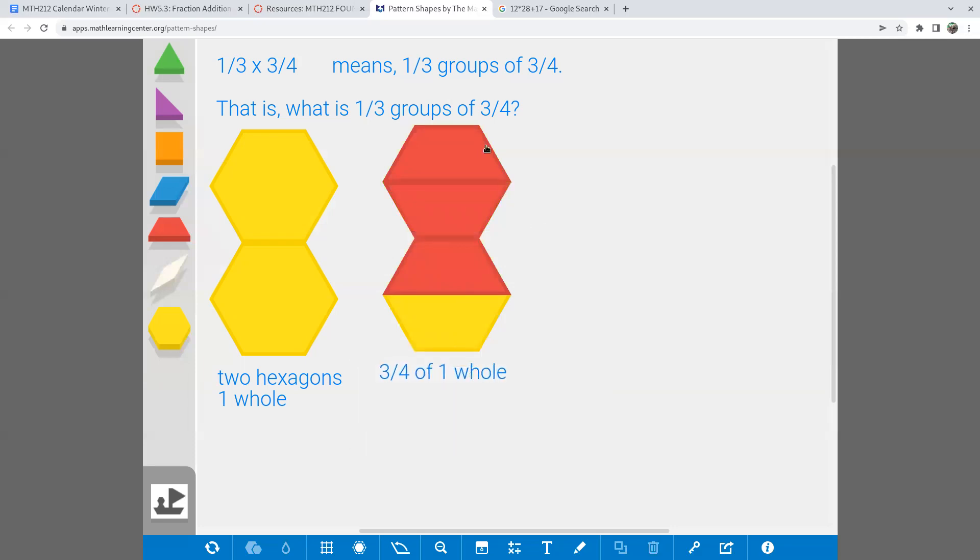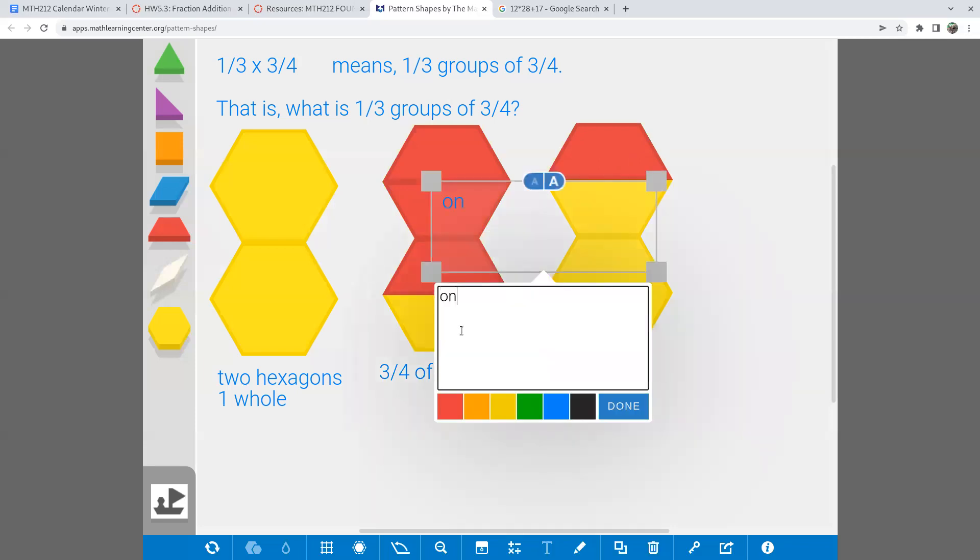Now that I can see the three-quarters, I should be able to identify what is one-third of that. So I'm going to redraw again. My three-quarters has three red hexagons. I want a third of that group. Well, that would just be one of them. So this piece right here, in this case, that one trapezoid is one-third of the three-quarters of the whole.